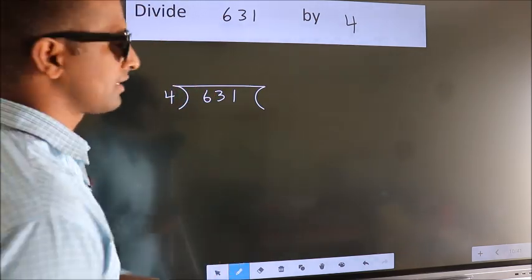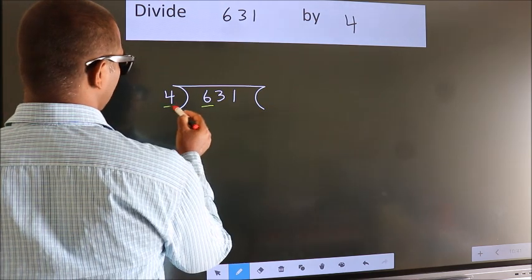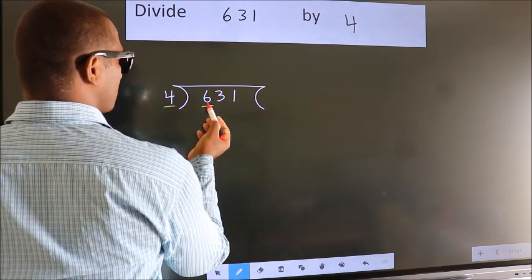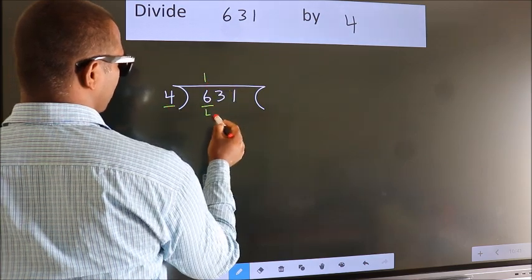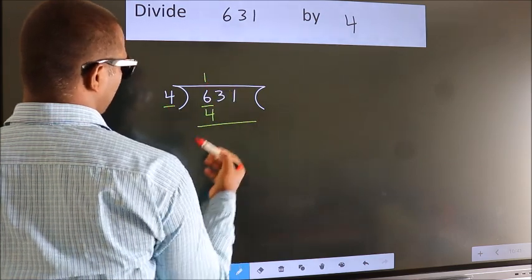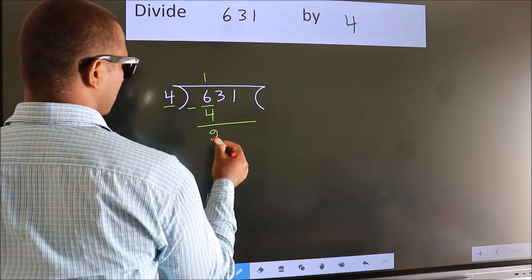Next. Here we have 6, here 4. A number close to 6 in the 4 table is 4 once 4. Now, we should subtract. We get 2.